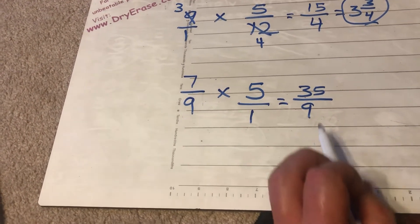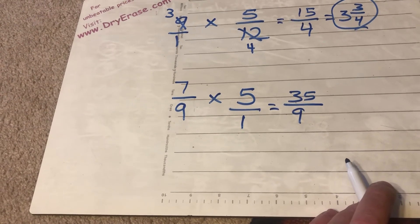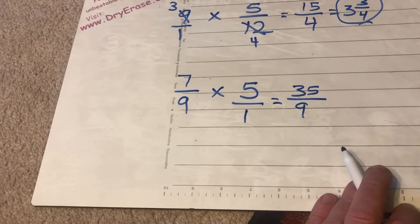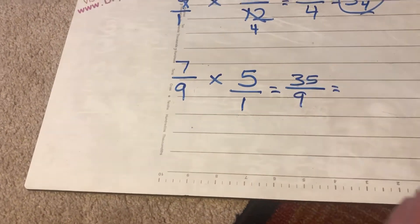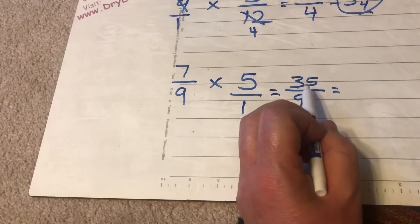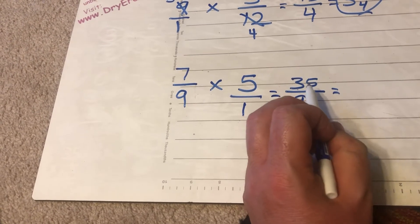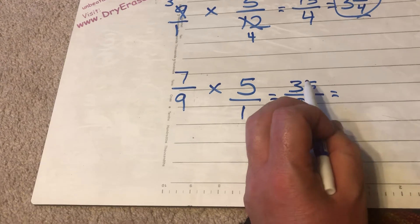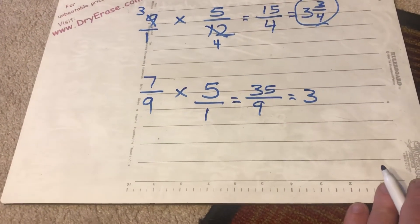Alright, 35 over 9. There's nothing besides 1 that can go into both 35 and 9. So I know it's in simplest form but I do need to turn it into a mixed number. 35 divided by 9. Well I know that 9 times 4 is 36. This is only 35. So 9 can go into 35 three times.